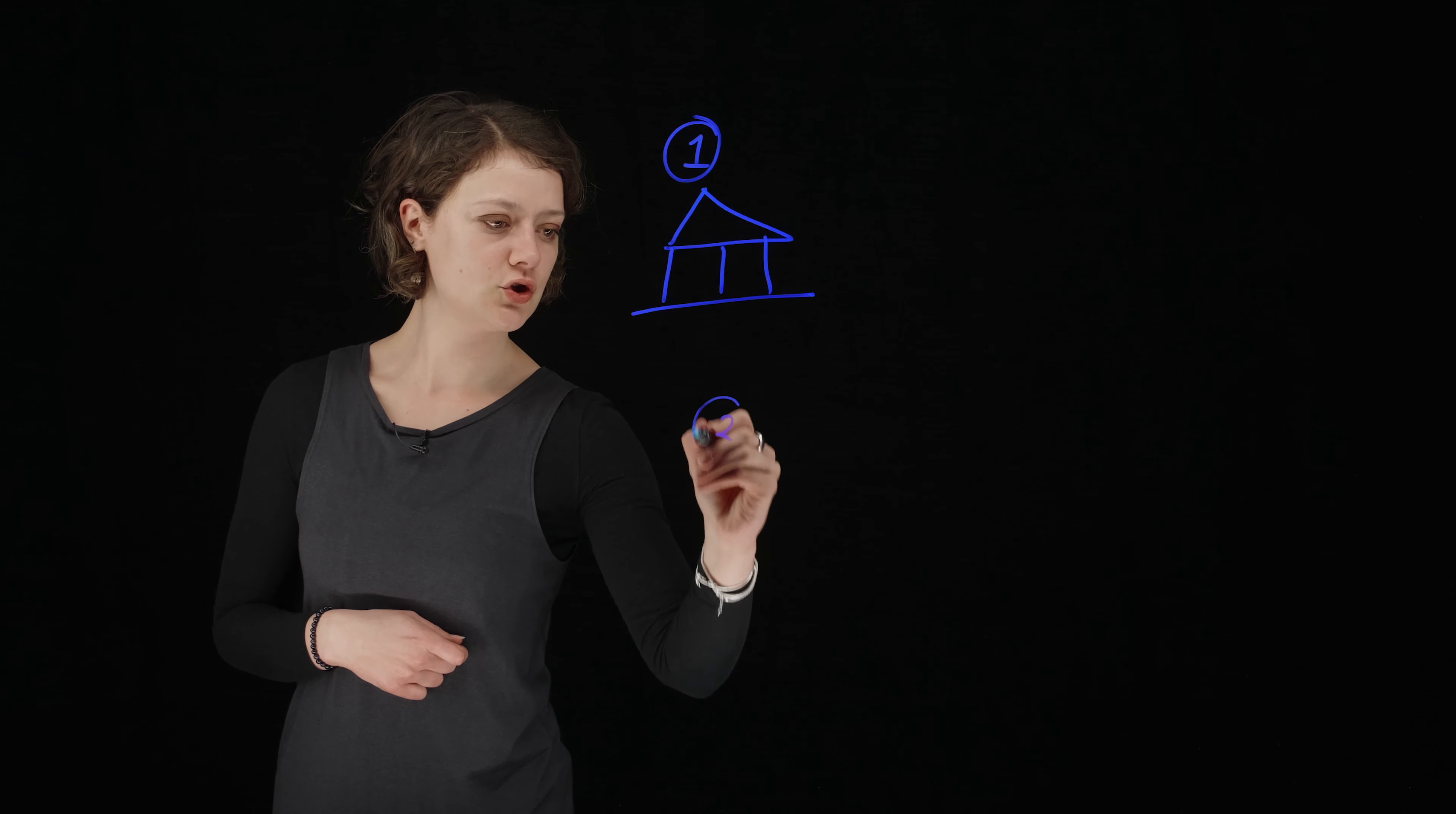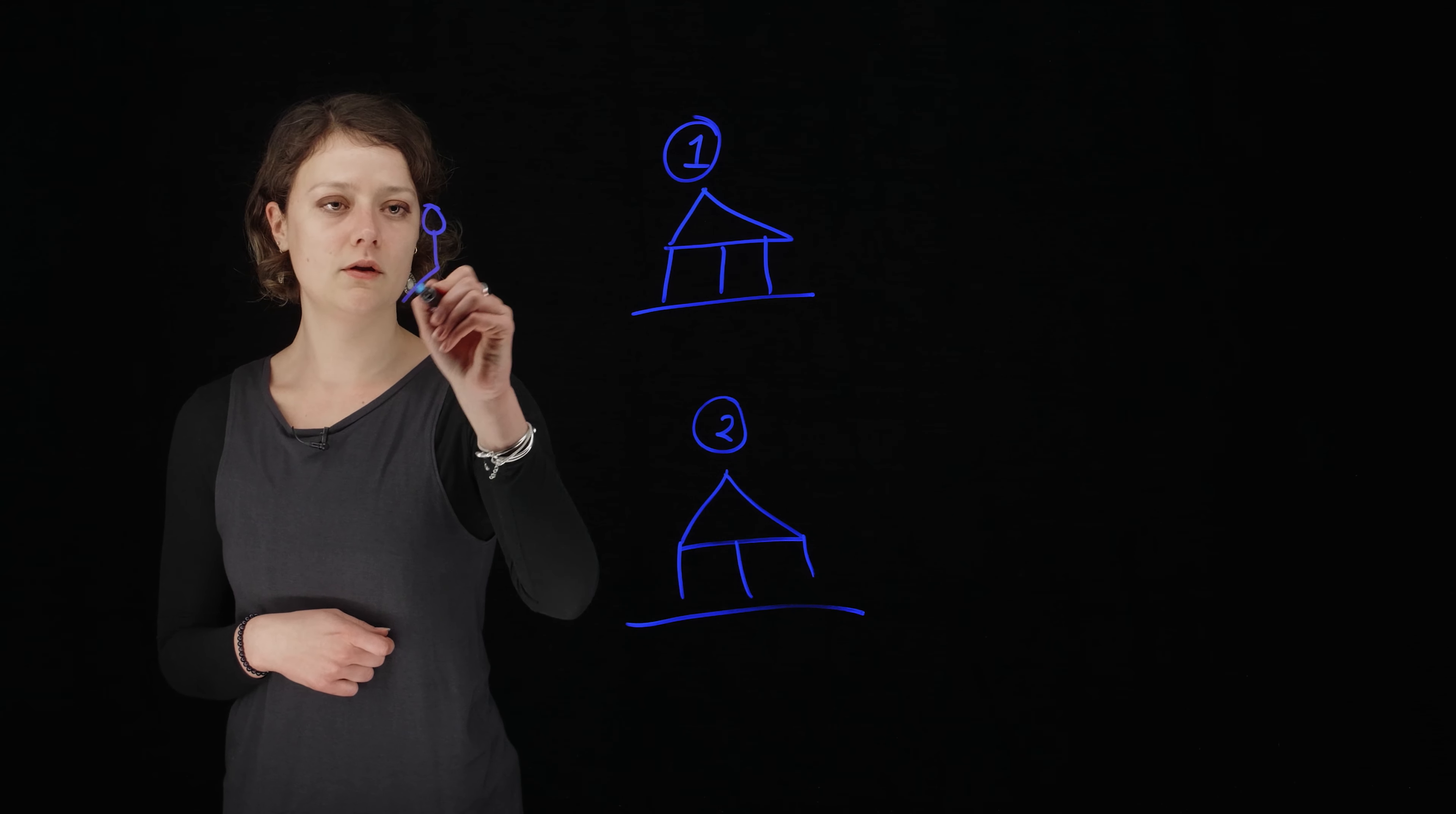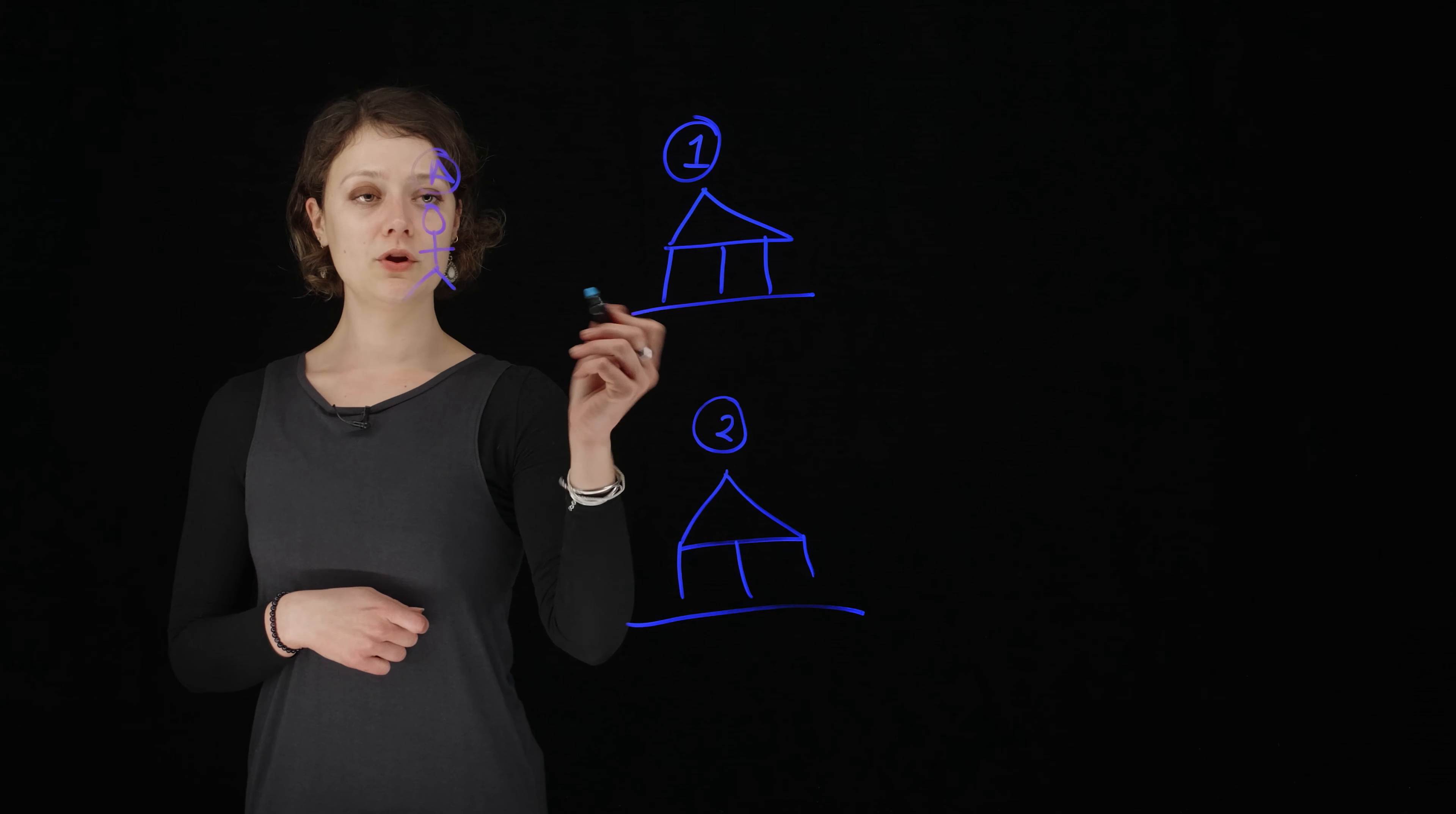We also need bank two because none of this works in isolation. You also need some people, so let's have person A over here. Now what do you do when you go to the bank? Well you can do two things.